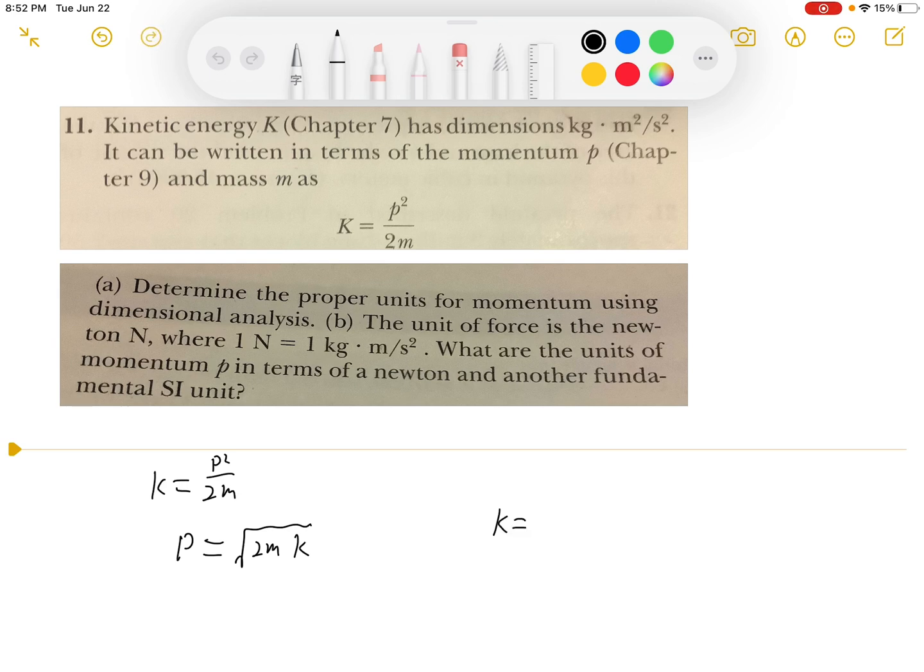K is one half mv squared, and v in dimensions is L over T, so we can substitute that. We will have one half m times L over T squared, and we substitute this K into our momentum equation.